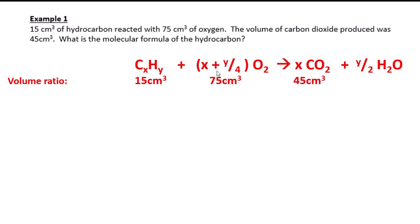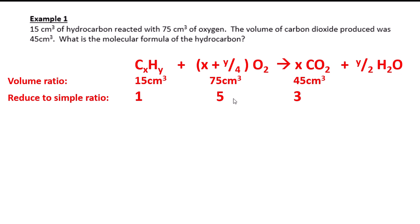Because the volume of a gas and the number of moles are so closely related, we convert to the simplest ratio. Taking 15 cm³ as one unit and dividing the others by 15 gives a ratio of 1 : 5 : 3. These numbers act like balancing coefficients — for every 1 mole of hydrocarbon, there are 5 moles of oxygen and 3 moles of CO2. The ratio of hydrocarbon to CO2 is 1 : 3, so x = 3, meaning we have C3.